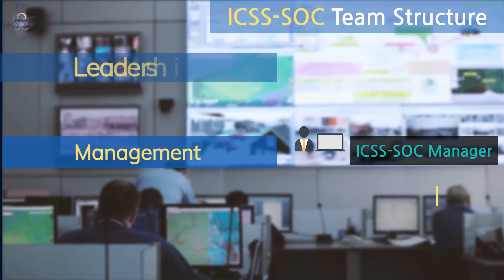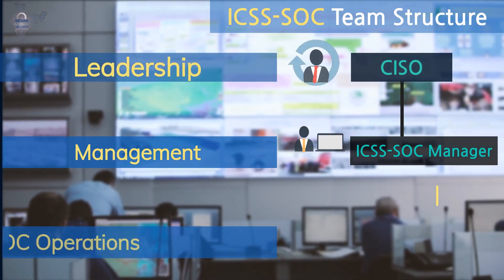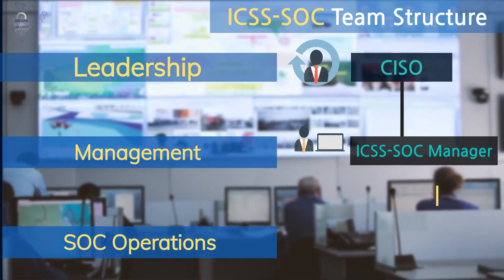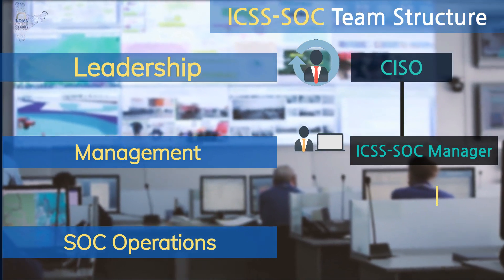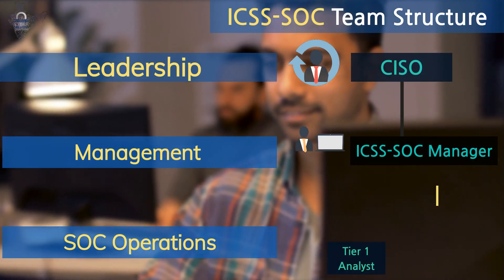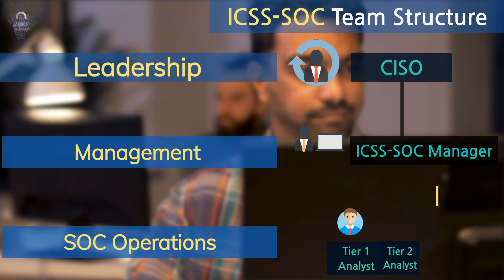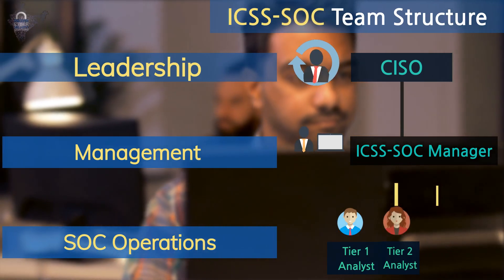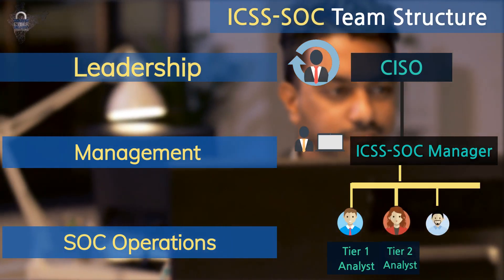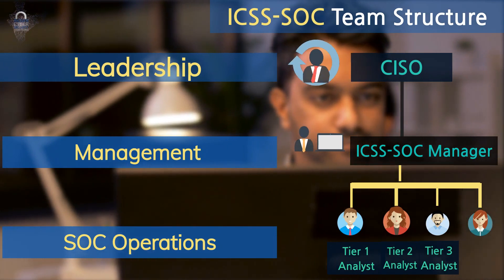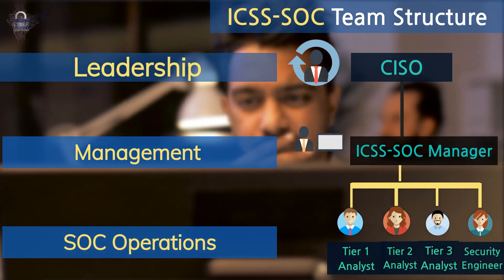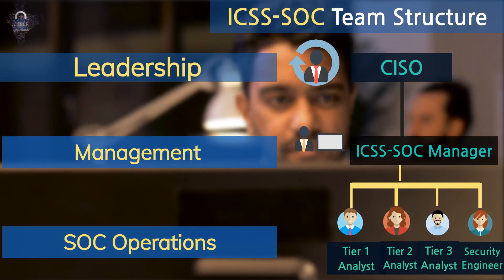ICSS Security Operations Center Team Structure. The SOC team consists of a SOC Manager who reports to the Chief Information Security Officer and manages the Operations Team. The Operations layer consists of Tier 1 Analyst, Tier 2 Analyst, Tier 3 Analyst also called Subject Matter Experts, and the Security Engineering Team. Let's understand each role in detail to make things more clear.